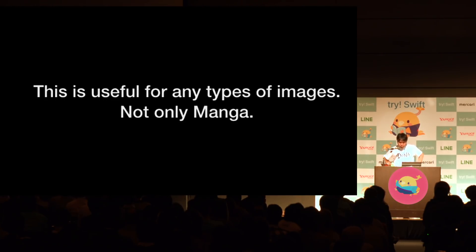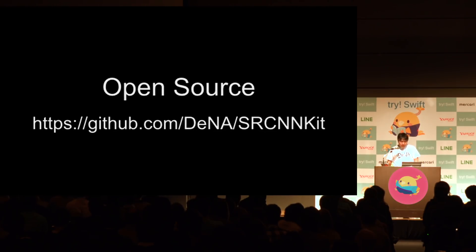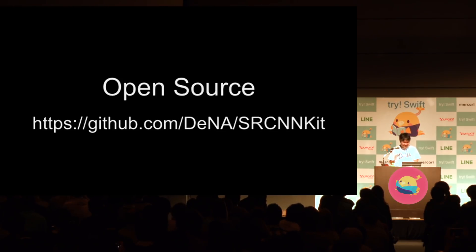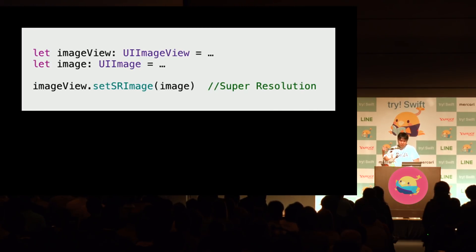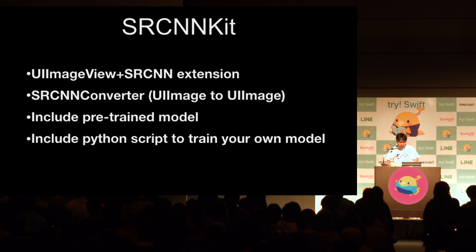This is useful for any type of image, not only manga. So I released it as open source today. You can get the demo code — it's named SRCNN kit. You just set a UIImage object to a UIImageView and you can get super resolution images. Very easy. It provides a UIImageView extension and converter.